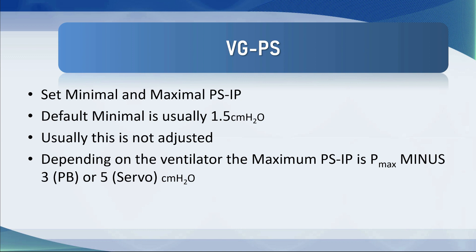You would normally set a minimal and maximum inspiratory pressure in volume guaranteed pressure support, but the default in most ventilators is fine — it's usually about 1.5 centimeters of water, which is just the base flow going through the system. You don't want someone getting 700 to 800 mils when they have normally compliant lungs; you want them to get the minimum support they need. The maximum pressure support level is the Pmax minus three on the Puritan Bennett or minus five on the Servo.